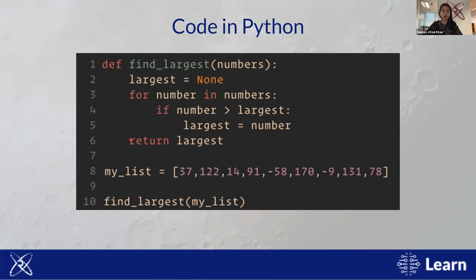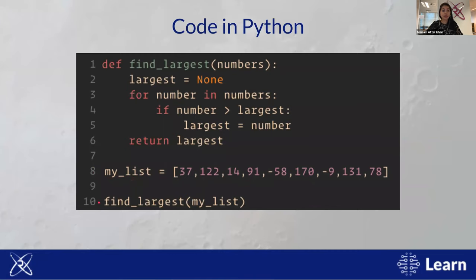At this point we've only defined the function — like writing a recipe but not yet making it. To actually use the function, we first define our list of numbers and store it in a variable called 'my_list' on line 8. Then on line 10 we call the function — that's the terminology — passing 'my_list' in parentheses as the input. This is where the computer actually executes the code.